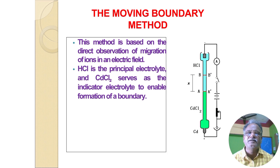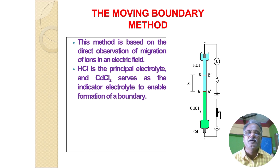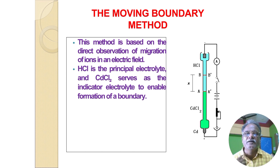This is the schematic representation of the apparatus used in the Determination of Transport Number by Moving Boundary Method. Here, let us see the labeling regarding the instrumentation. This method is based on the direct observation of migration of ions in an electric field. In this experiment, HCl is the principal electrolyte and CdCl₂ (cadmium chloride) serves as the indicator electrolyte to enable formation of a boundary.